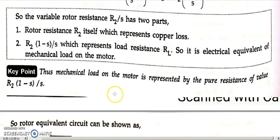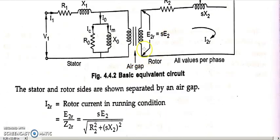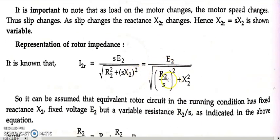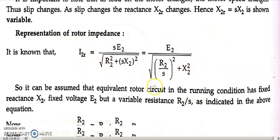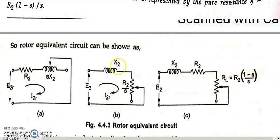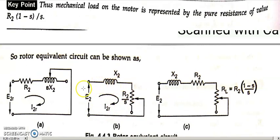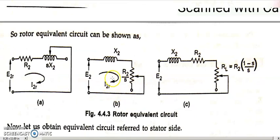We already discussed that the rotor circuit can be written in terms of I2R equal to S times E2 divided by the square root of R2 squared plus (S·X2) whole squared. By taking S squared common, S gets cancelled, giving us I2R in the simplified form. So in that rotor circuit we have I2R, E2, R2/S, and X2 — four things — all accounted for. Both circuits are electrically equivalent.